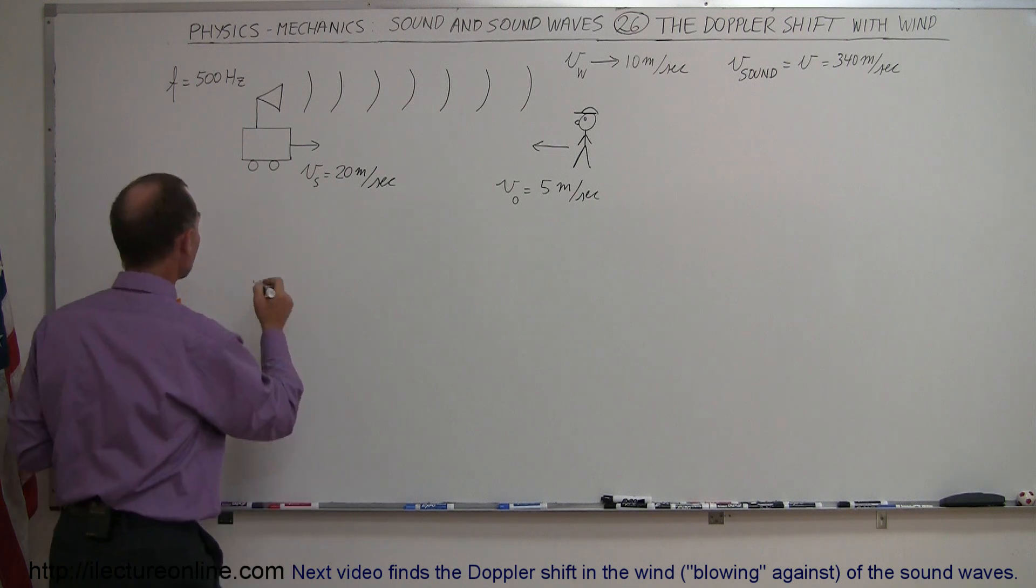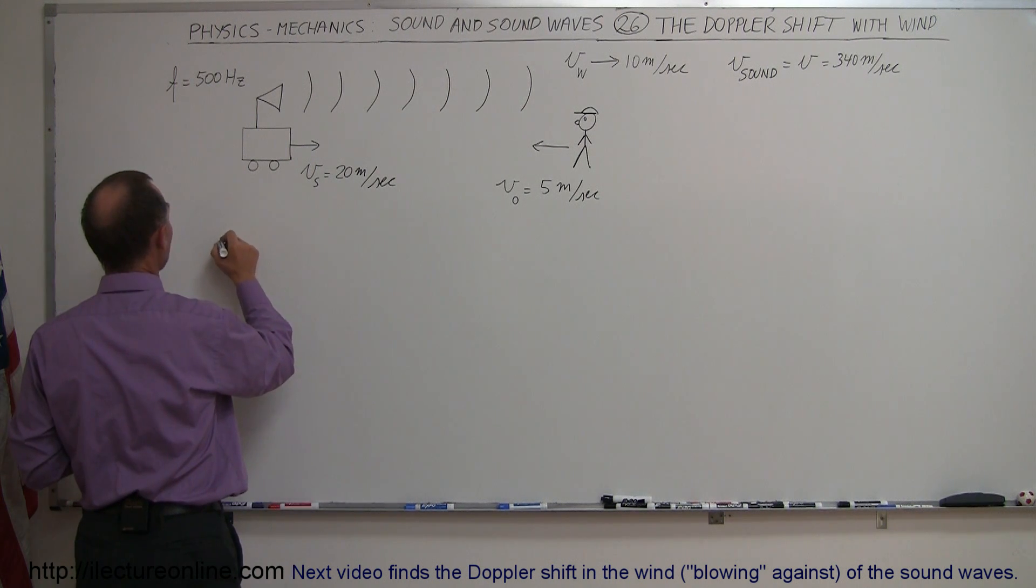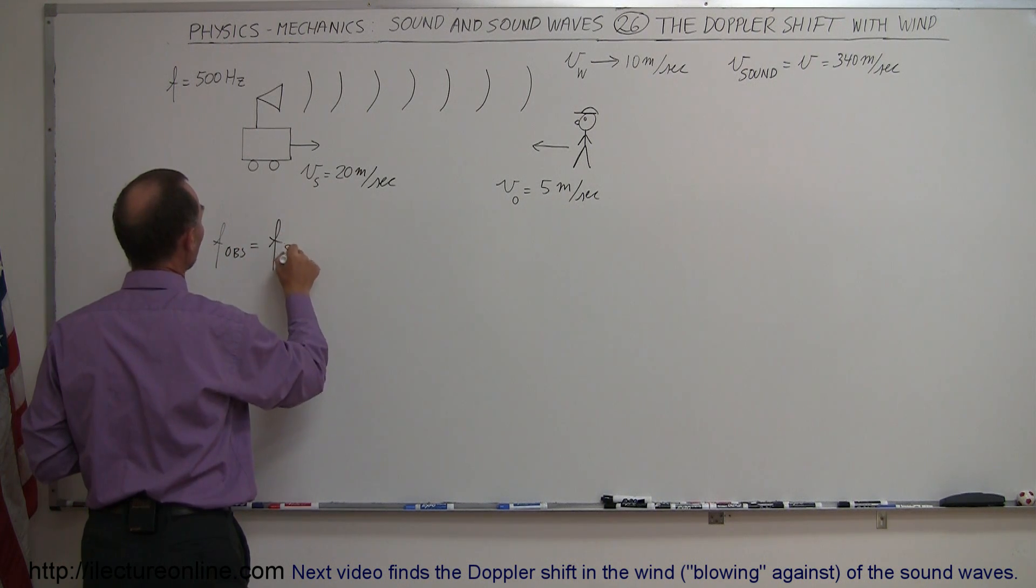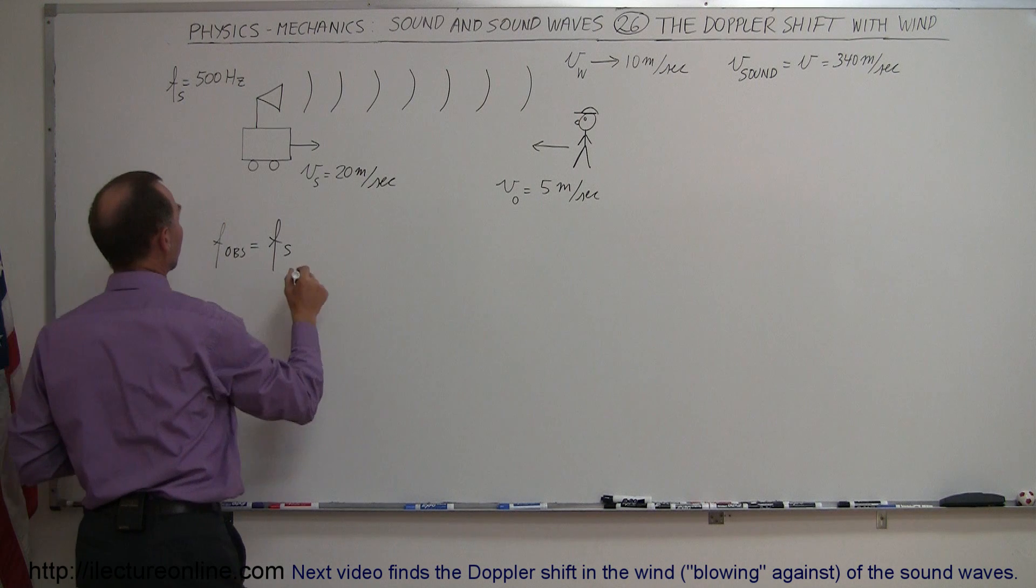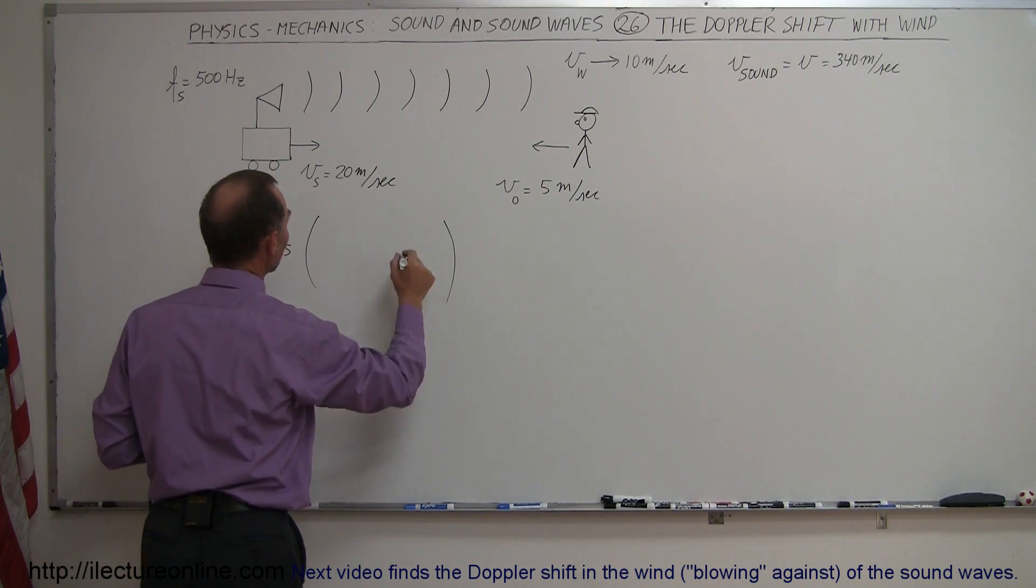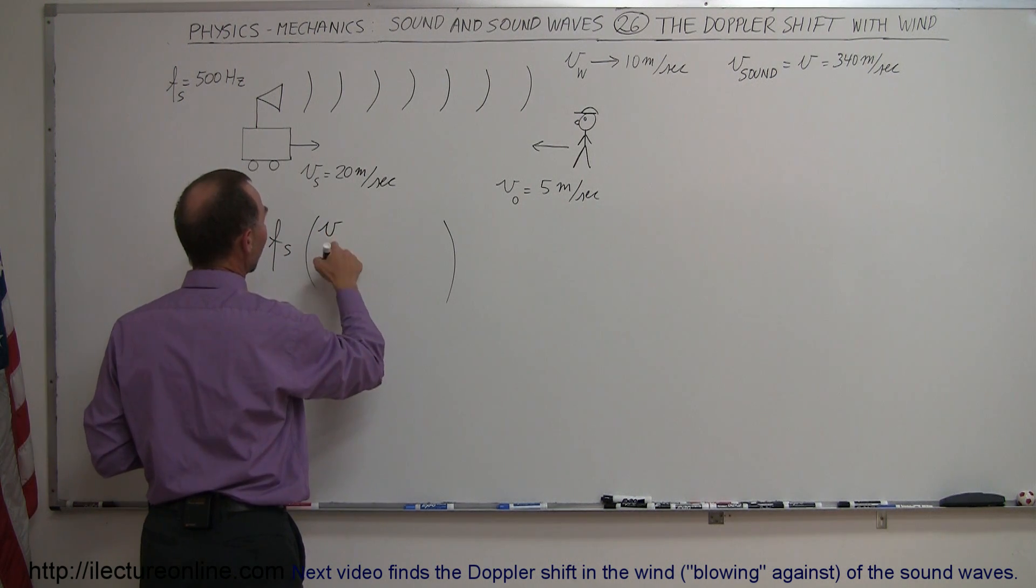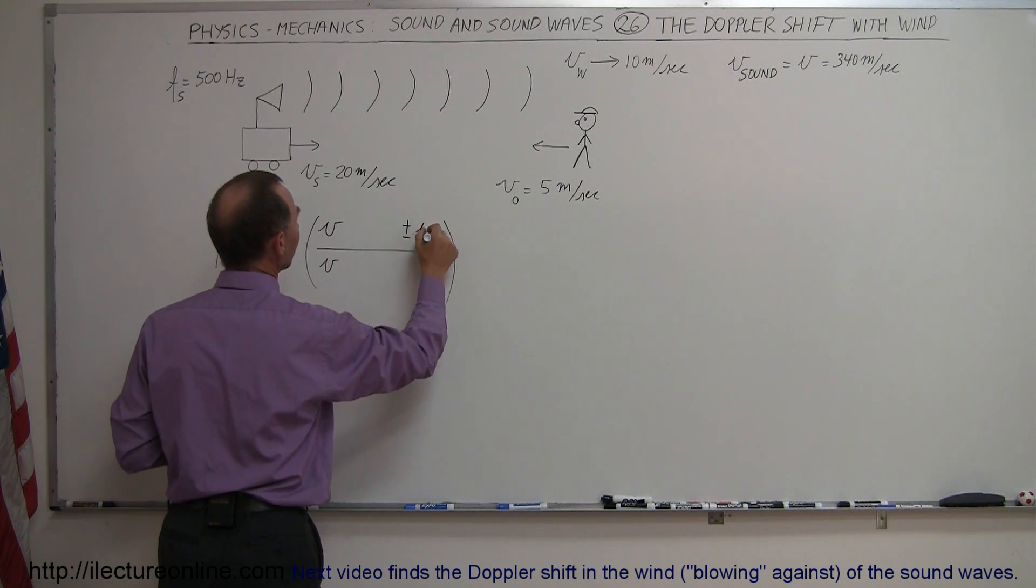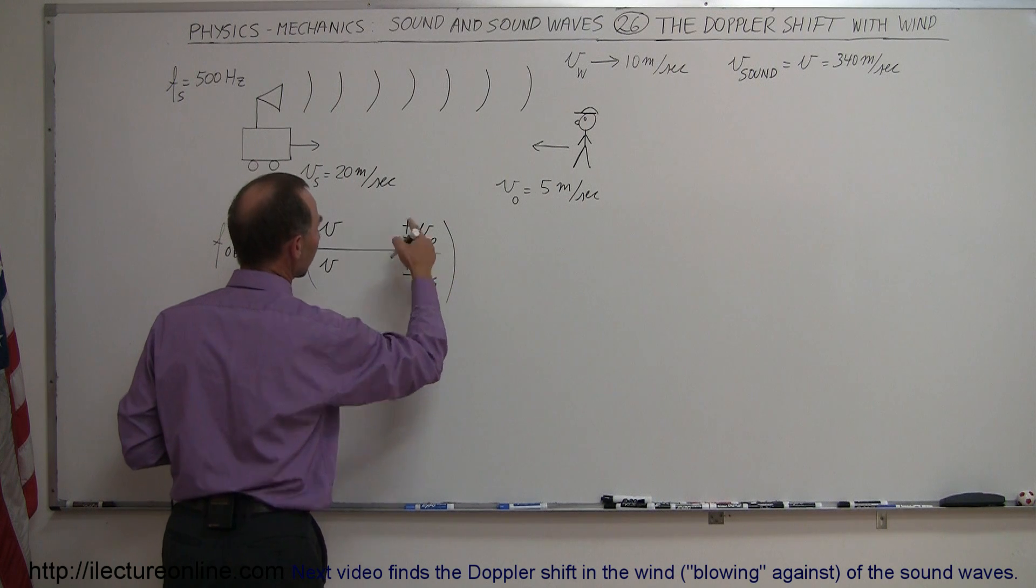So what the equation turns out to be, the frequency observed is equal to the frequency of the source times, and the equation normally is velocity of sound in air divided by velocity of sound in air, plus or minus the velocity of the observer, and plus or minus the velocity of the source.